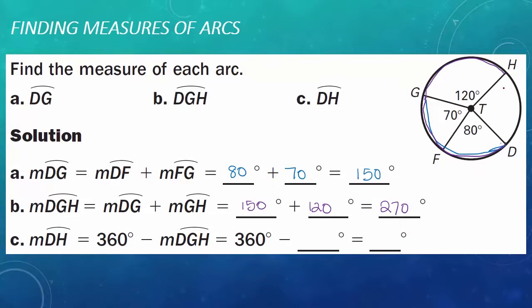Finally, we need to find the measure of arc DH. That is a minor arc. To find the measure of arc DH, I will take the rest of the measures — arc DGH — and subtract that from 360 degrees. So I have 360 minus 270, and 360 minus 270 gives me 90 degrees. So arc DH is 90 degrees.